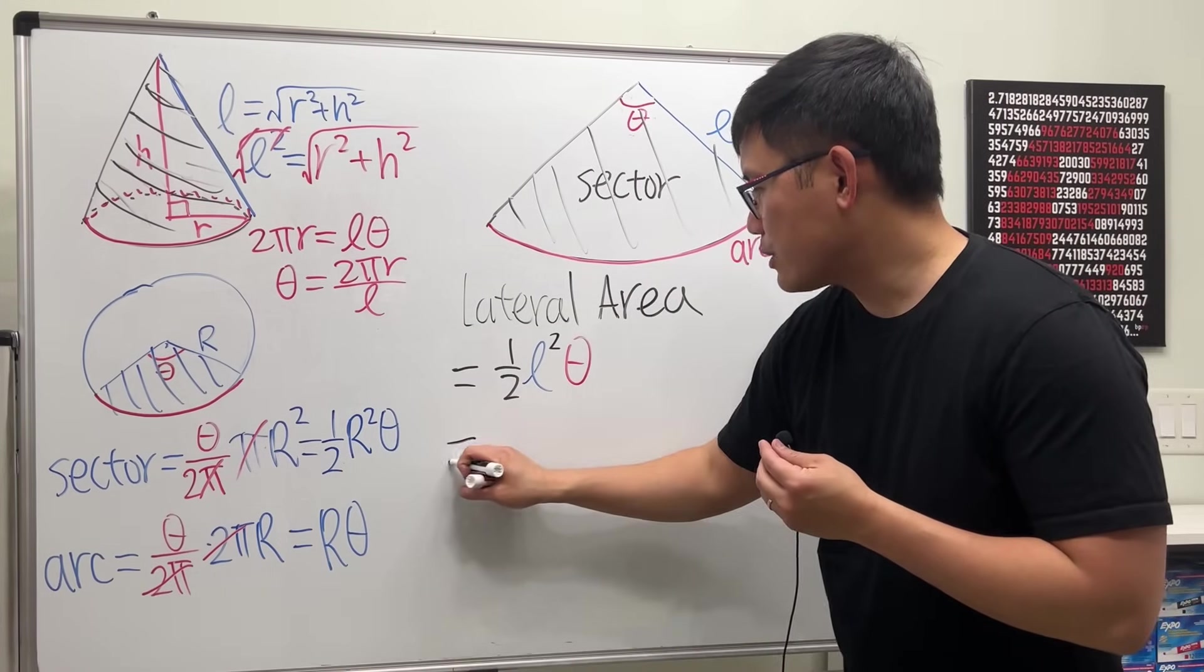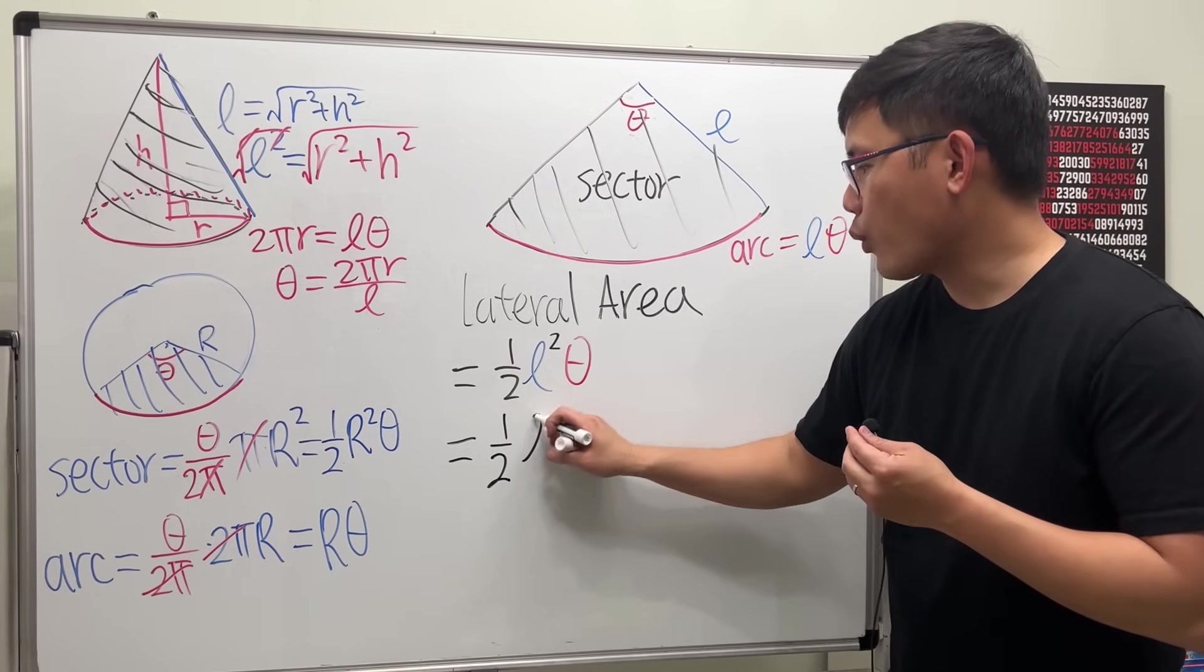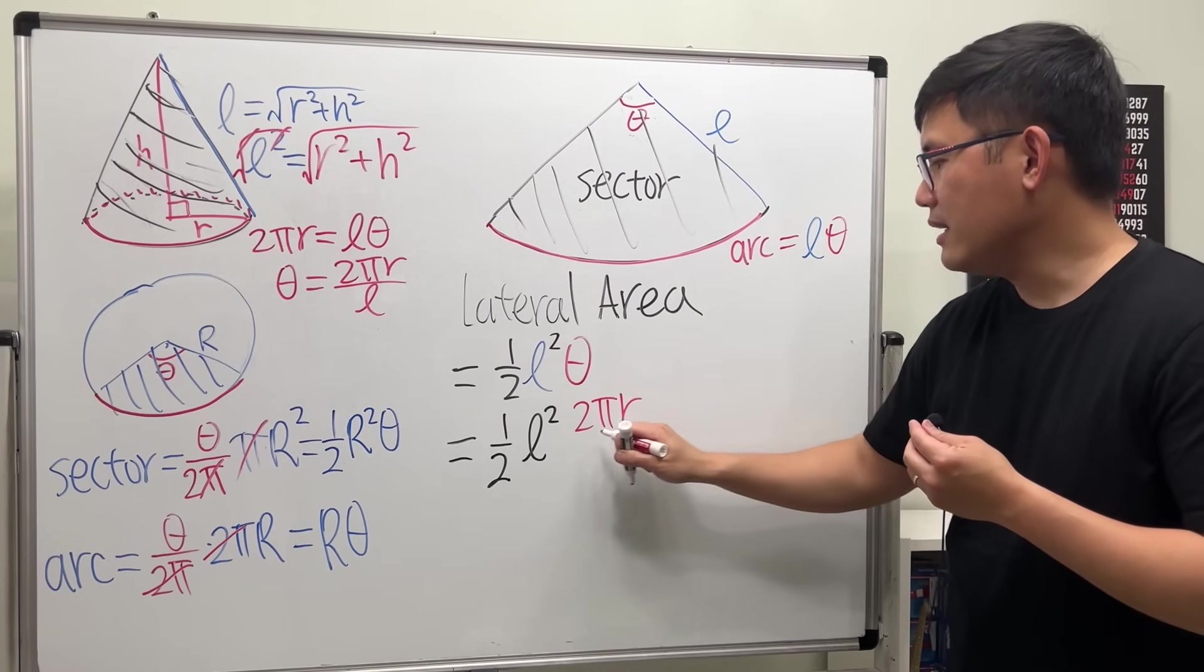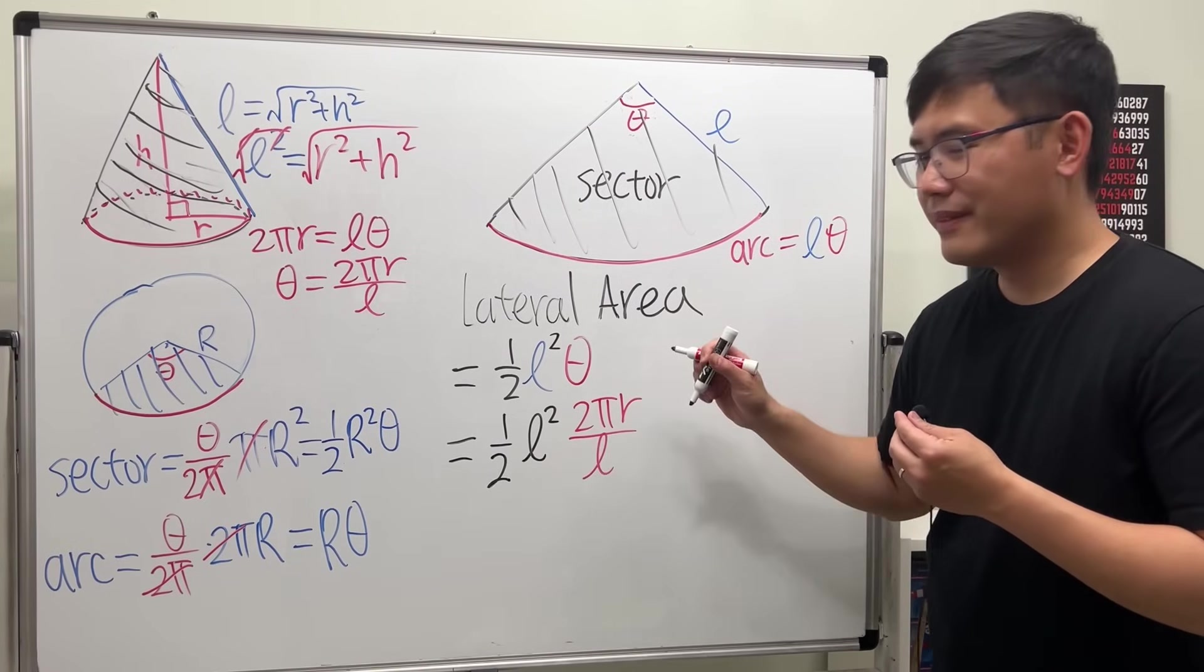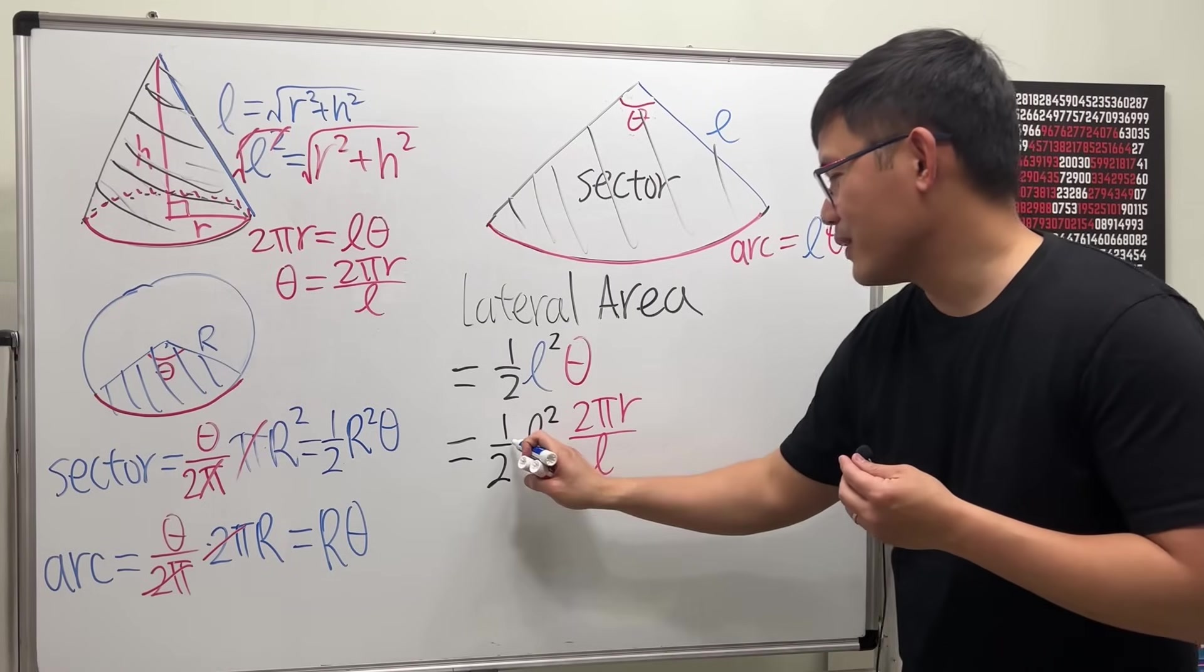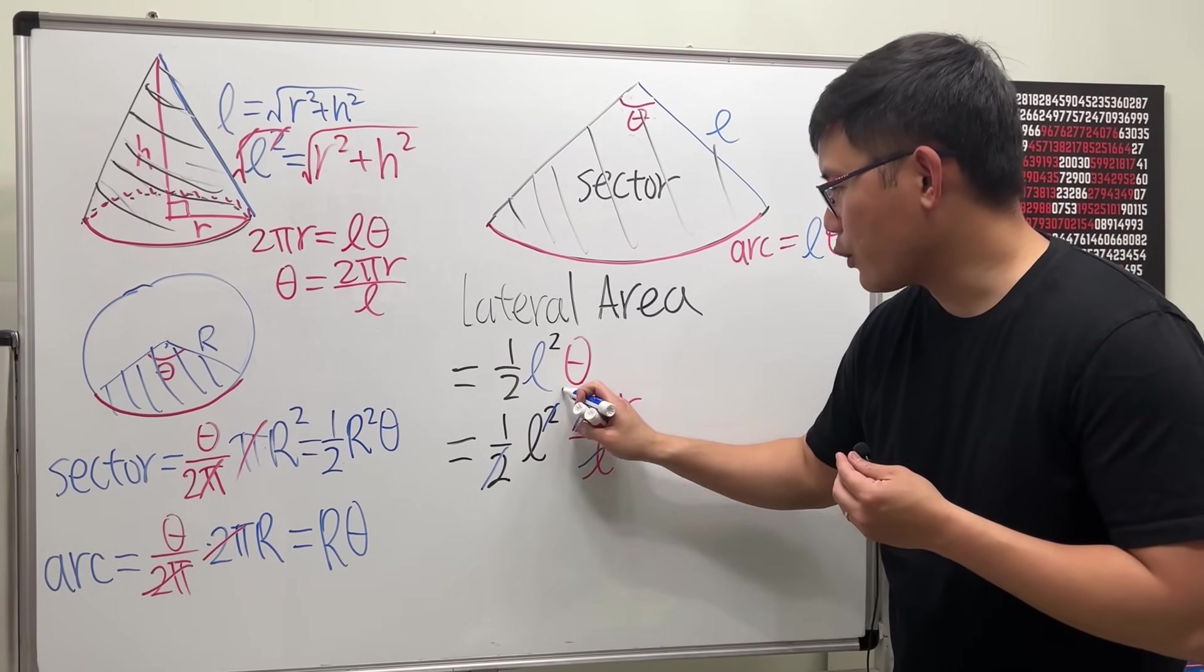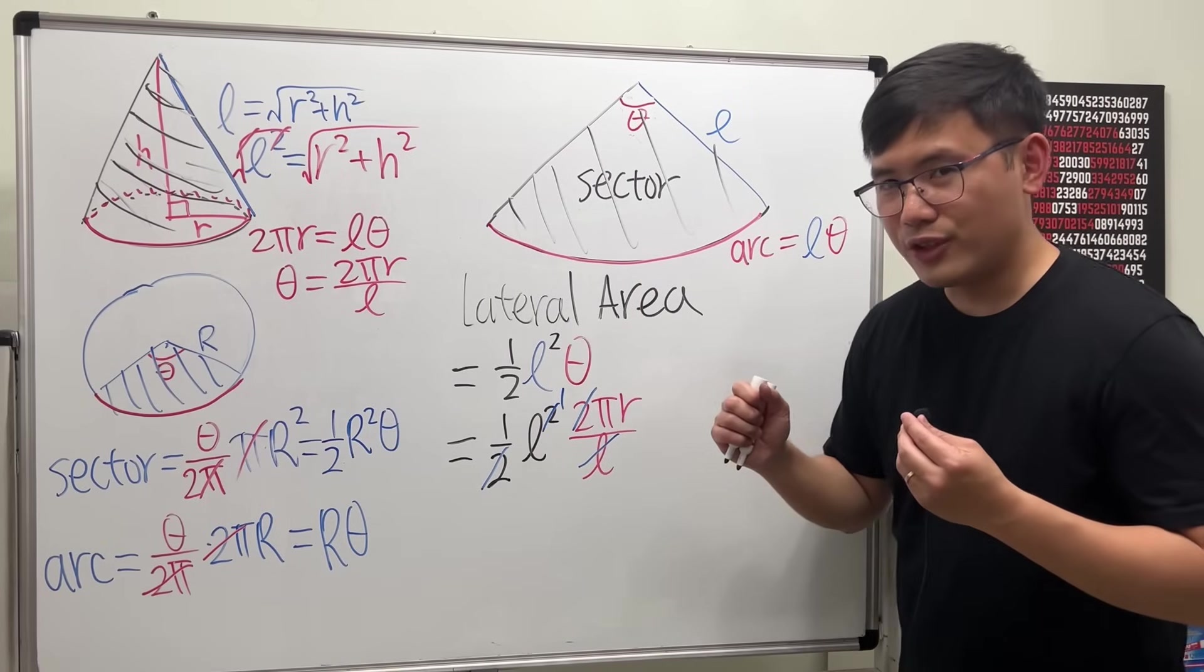So for the lateral area, we have 1 half, L squared, theta is that, 2 pi r over L. And we can cancel the 2 and 2, and we can cancel the L with 1 of the L right here.